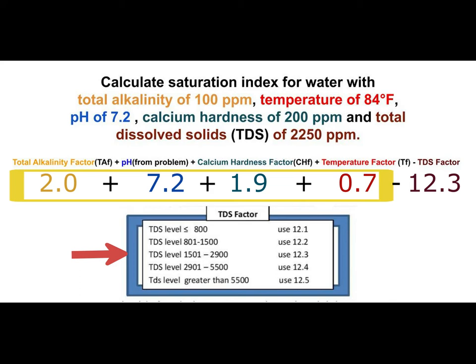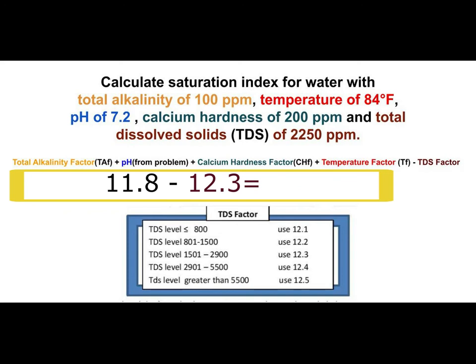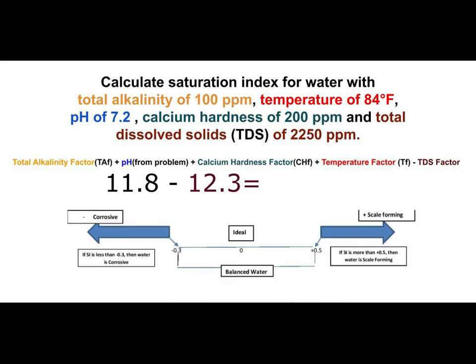Now add everything up: 2.0 plus 7.2 plus 1.9 plus 0.7 equals 11.8. Then subtract 12.3, and you get an answer of negative 0.5. That puts you just past negative 0.3, which means it's not balanced water — you have corrosive, hungry water.